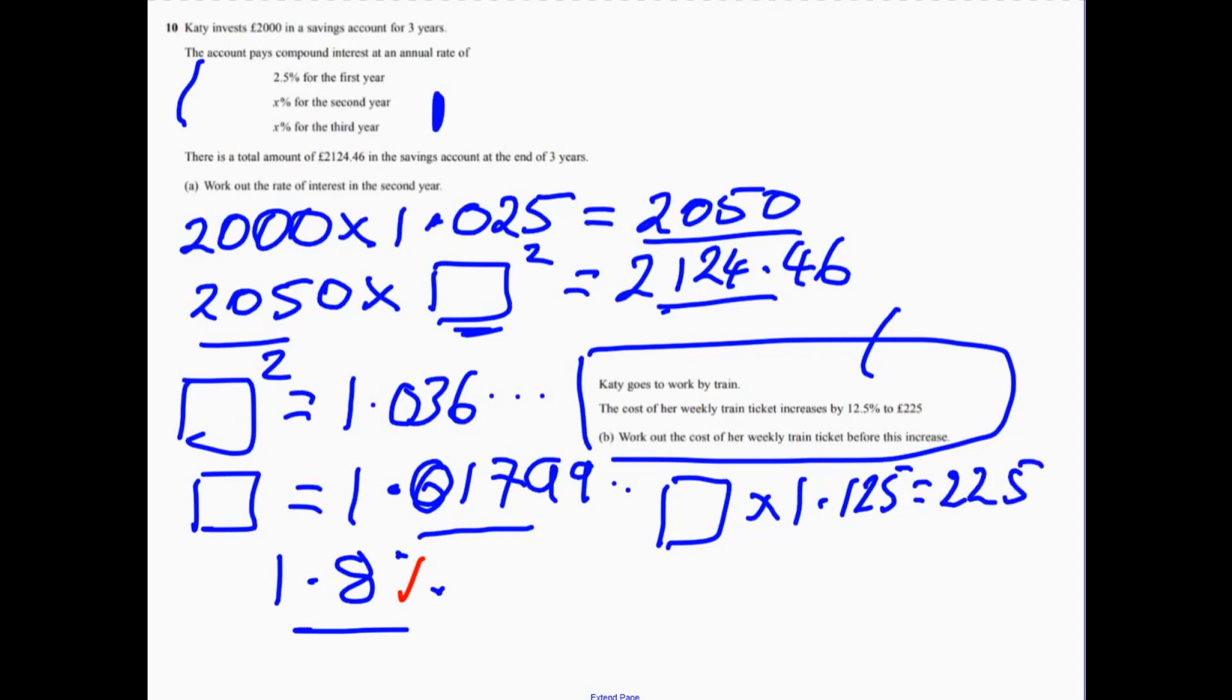If we do this figure, divide this figure, we will find out the original cost. So, the original cost here would equal 200... We're talking about pounds. Let's squeeze a little pound sign in there.